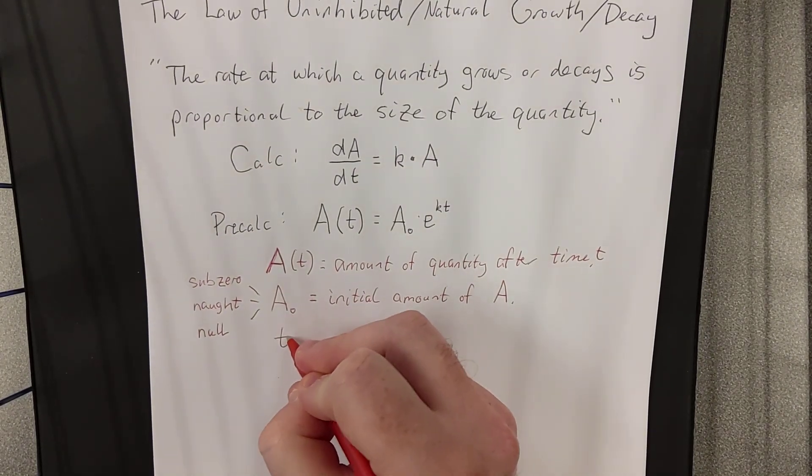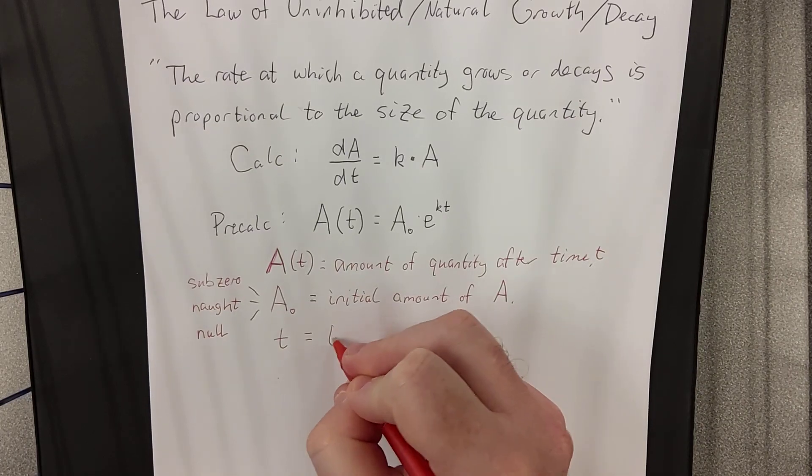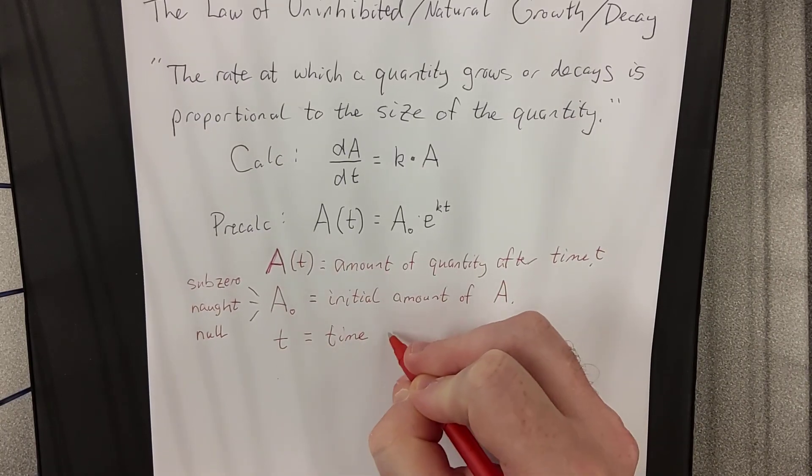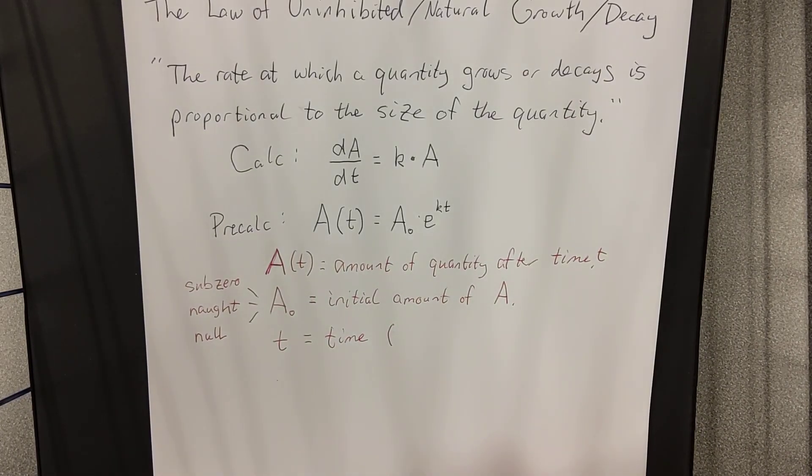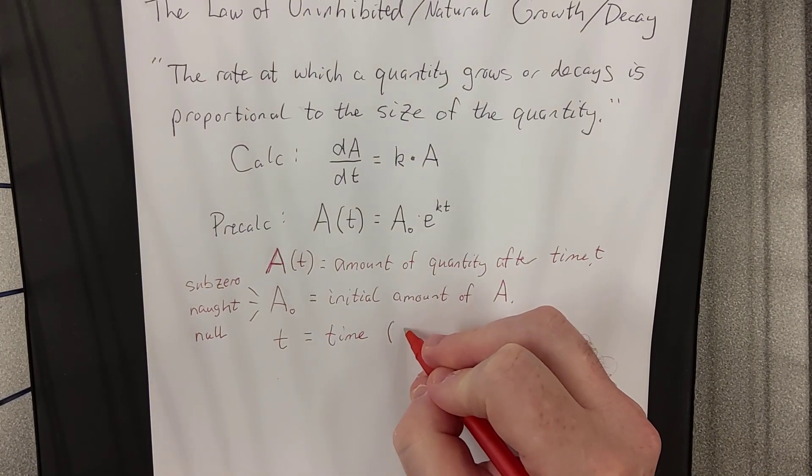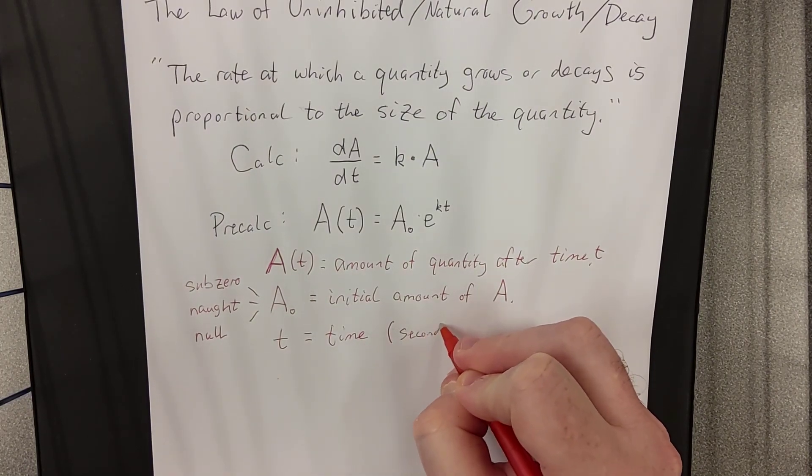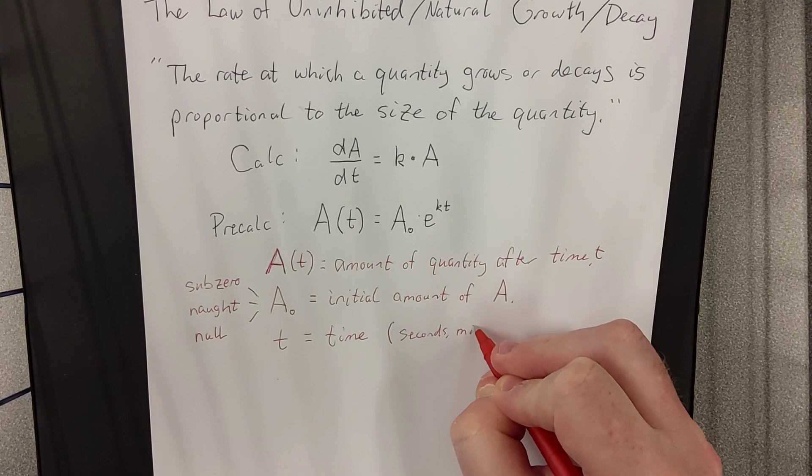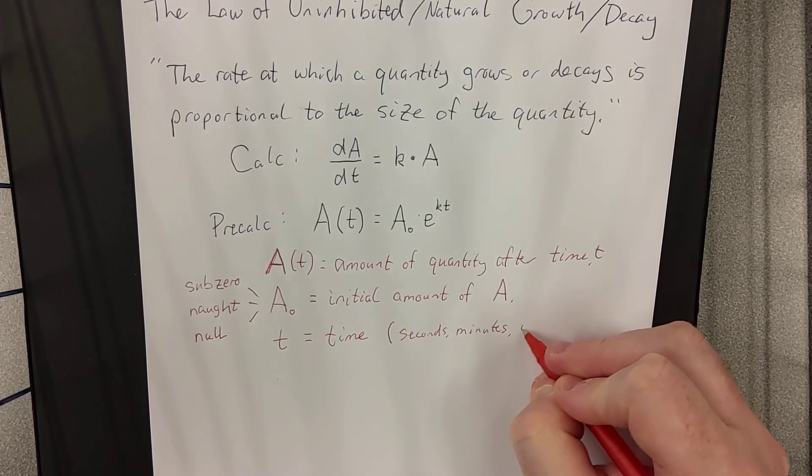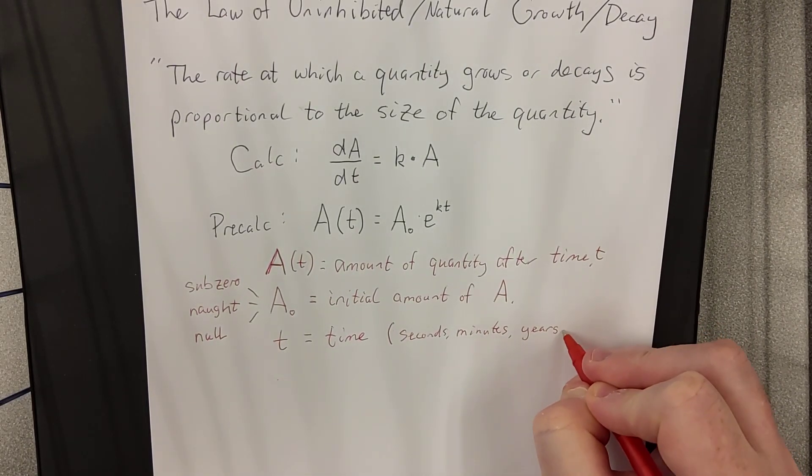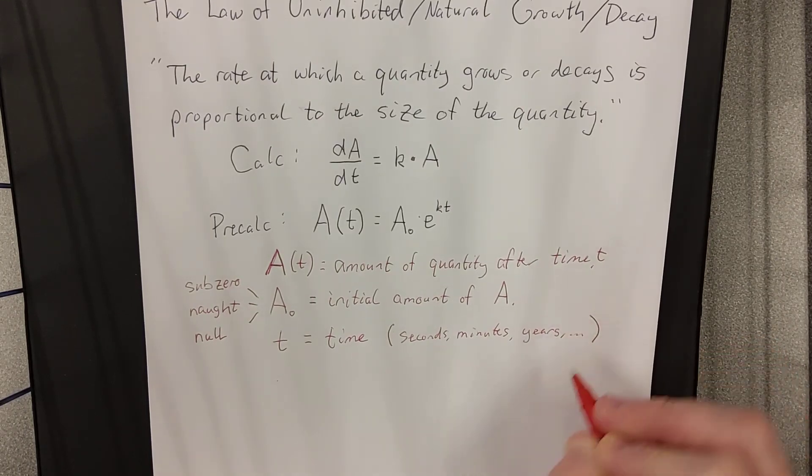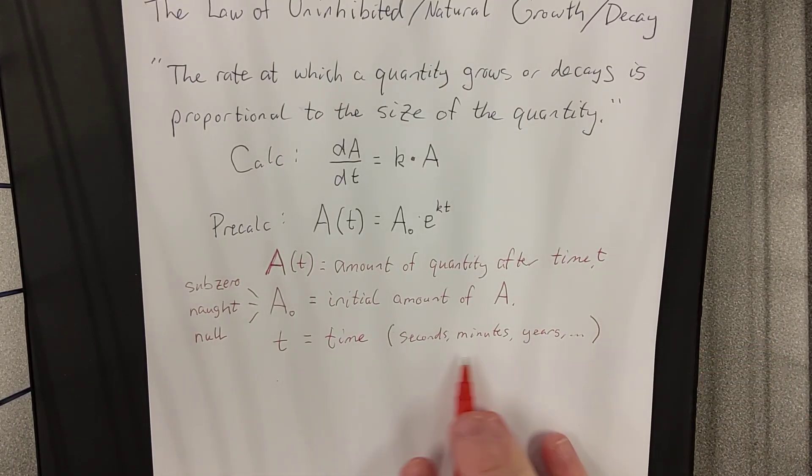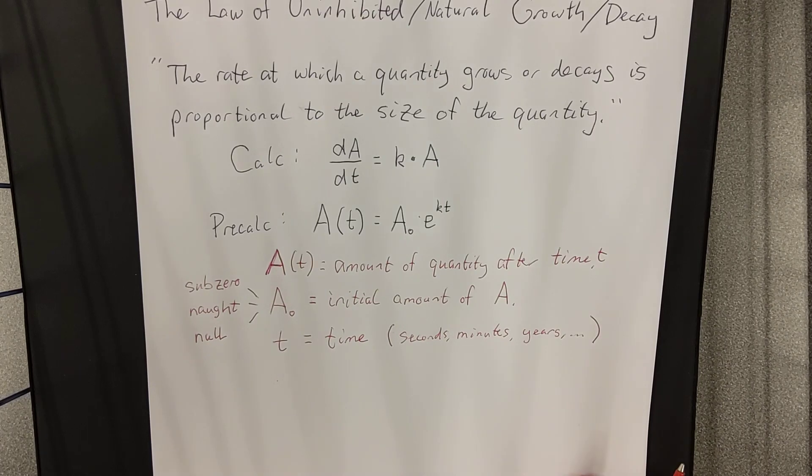Now, this one should hopefully be pretty clear as well. T refers to the amount of time that has passed. Now, depending on the kind of problem you're doing, it could refer to a number of seconds. It could refer to minutes. It could refer to hours, weeks, years. It just depends on what information is given in the problem that you make an appropriate decision about what the appropriate units would be.